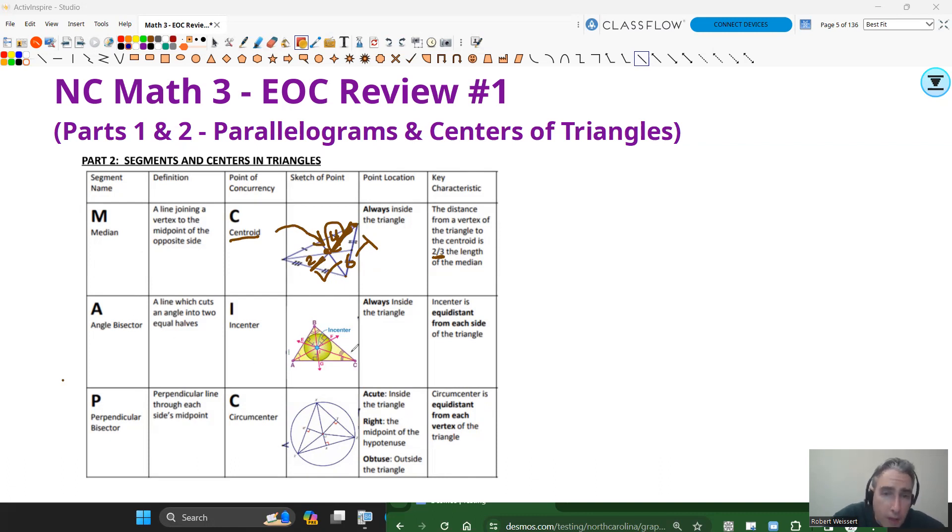Angle bisectors, they cut the angles in half. I don't know if you can see these very well, but each of those angles is marked congruent. And there's quite a few properties on there, but the main thing is that they form a point where they all meet called the in-center, which is the same distance from each side of the triangle. We said it's equidistant. It's the center of a circle inscribed in the triangle. So that's kind of a nice little property. In-center is from the angle bisector.